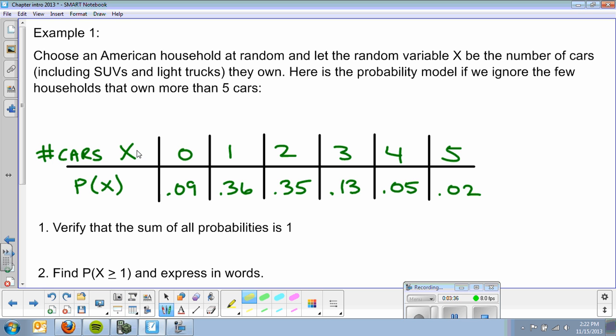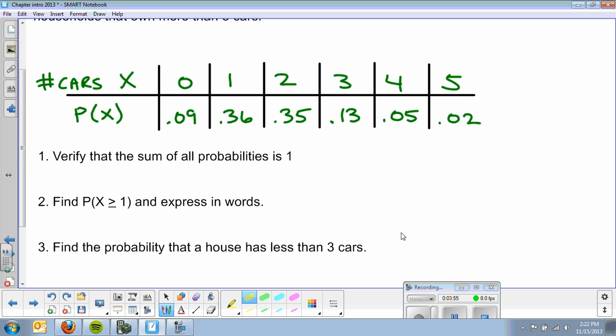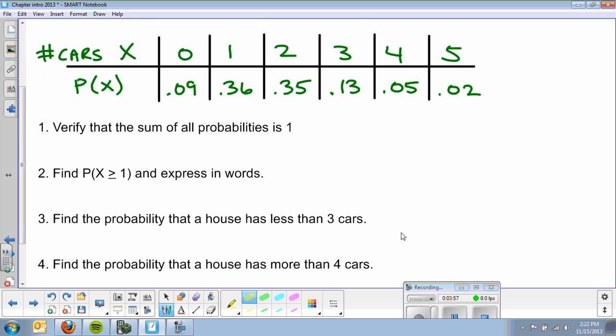So, here we have the number of cars. A household could have no cars, one car, two, three, four, five. The probability that they have no cars, one, two, three. And you can kind of see these probabilities trail off. This is low, too. The probability of not having a car is low. And then it jumps up for one and two. And then it starts to trail off again. Okay. So, we will walk through these problems, and that will be it.